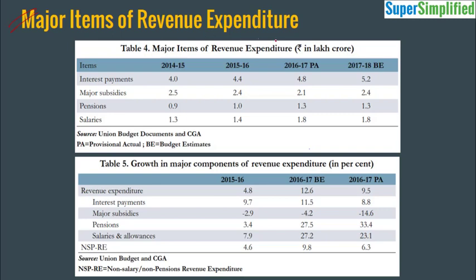Looking at major items of revenue expenditure and their growth: interest payments increased by 11%. Major subsidies growth is negative — subsidies are actually reducing, which is a good sign showing the government is rationalizing subsidies. Pensions saw a huge 27.5% increase, and salaries and allowances increased by 27.2%. The main culprit behind rising revenue expenditure is the Seventh Pay Commission and One Rank One Pension.